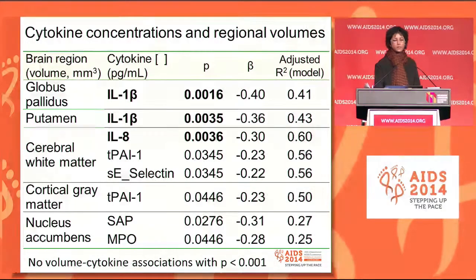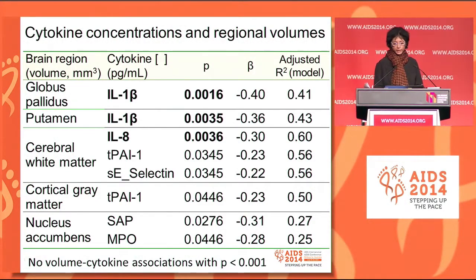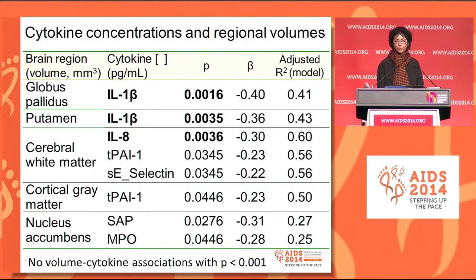When we looked at absolute cytokine concentrations in relation to regional brain volumes, we found that several cytokines were negatively associated with brain volumes. The most significant, shown in bold, were IL-1 beta, which is associated with globus pallidus and putamen volume, and IL-8. There were no associations with p-values less than .001.